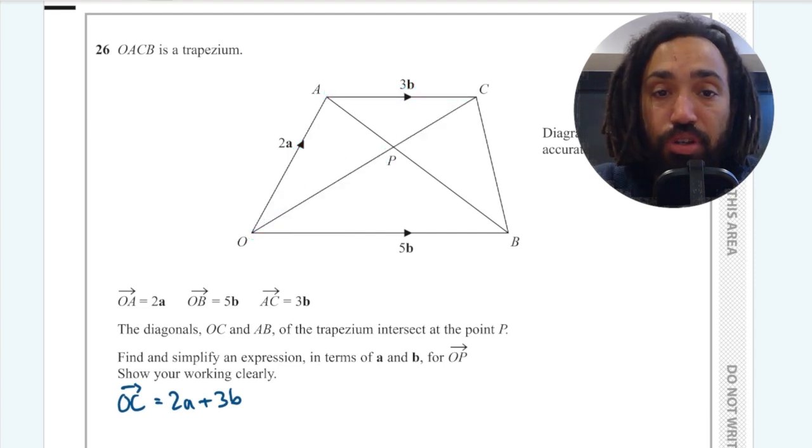The next thing I'm going to do is get an expression for OP. Now OP is some fraction of the vector we've just found OC. So I could write that as X open brackets 2A plus 3B where X is that fraction.